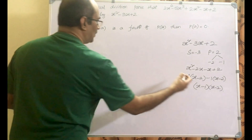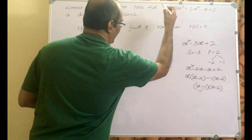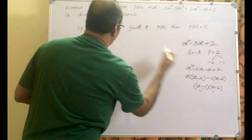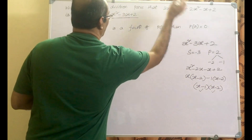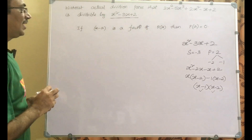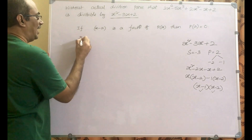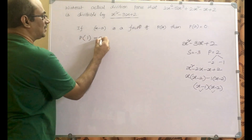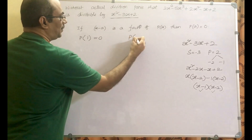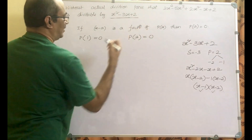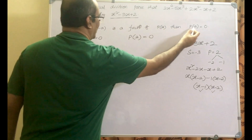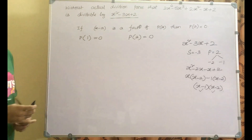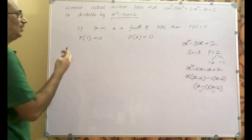So if we are able to prove that x minus 1 is a factor of the given polynomial and also x minus 2 is a factor, then automatically their product, that is x square minus 3x plus 2, becomes a factor of that. What we need to prove is p of 1 equals 0 and p of 2 equals 0. If we are able to prove that, automatically x minus 1 and x minus 2 will become factors.